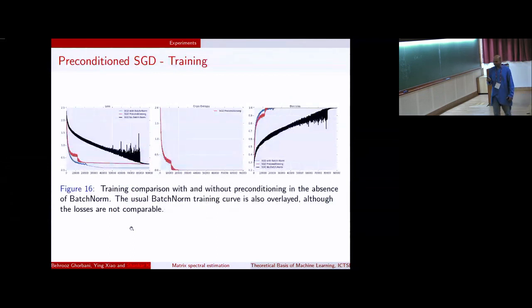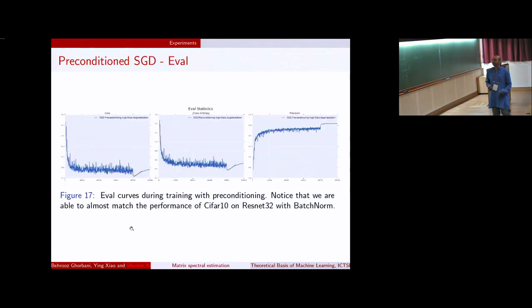Here's what happens when you do this. The black curve is SGD on a non-batch norm network, without any preconditioning. And the red curve is the one with preconditioning. I have added the batch norm curve. It looks like batch norm is doing much better anyway, but there's a small catch here. The losses are not comparable, because it changes the loss values. But you can see that if you look at the precision, it actually reaches 100 percent precision faster than with batch norm.